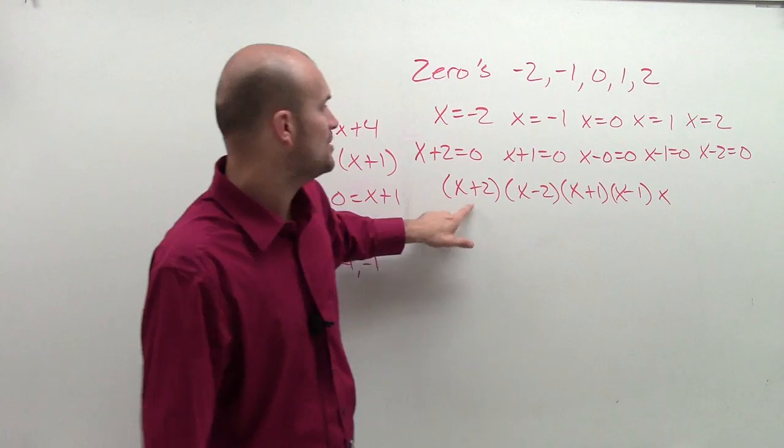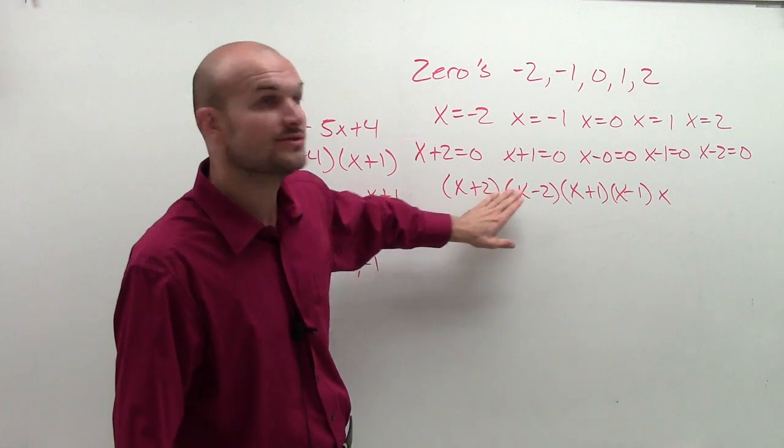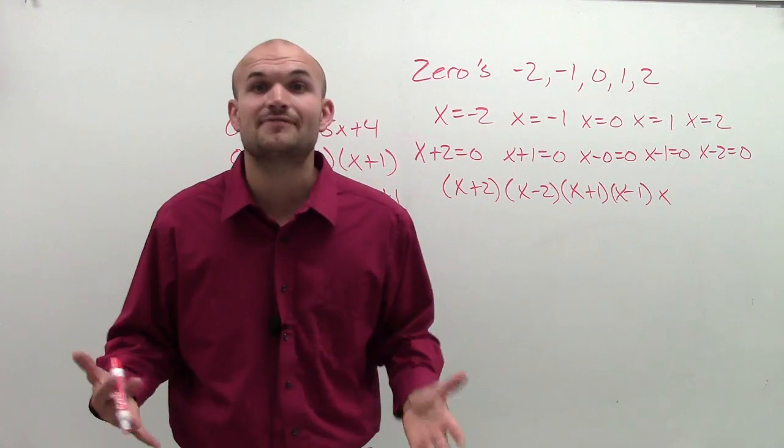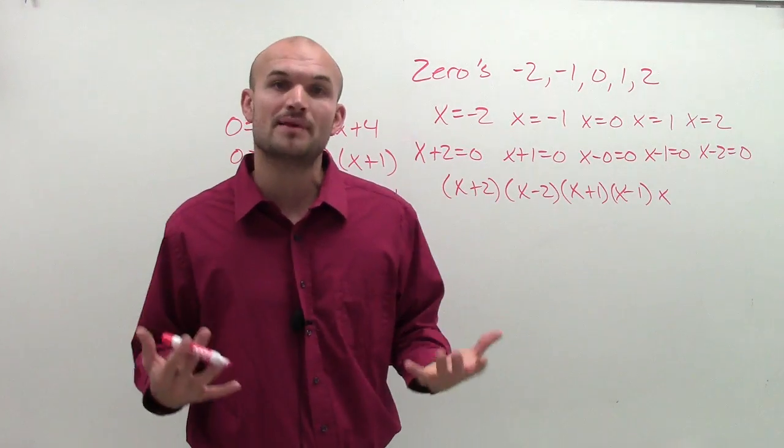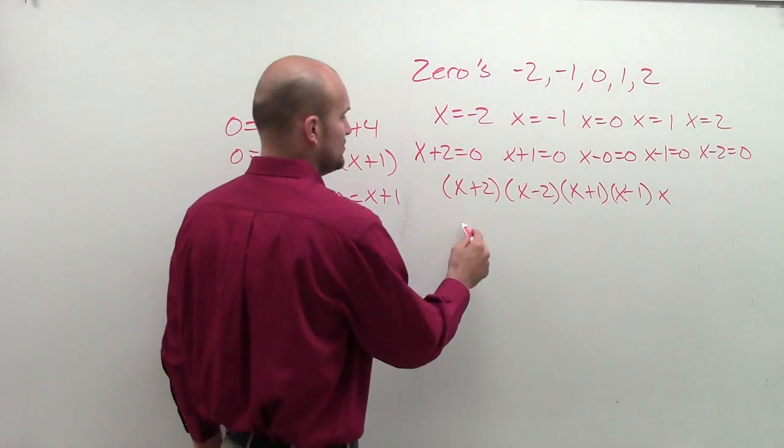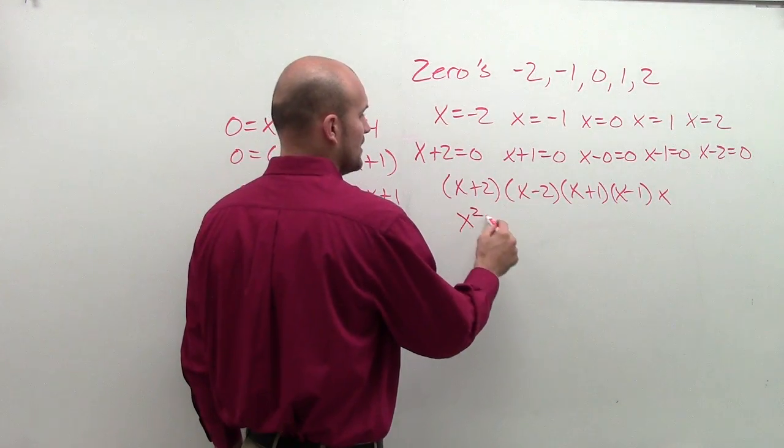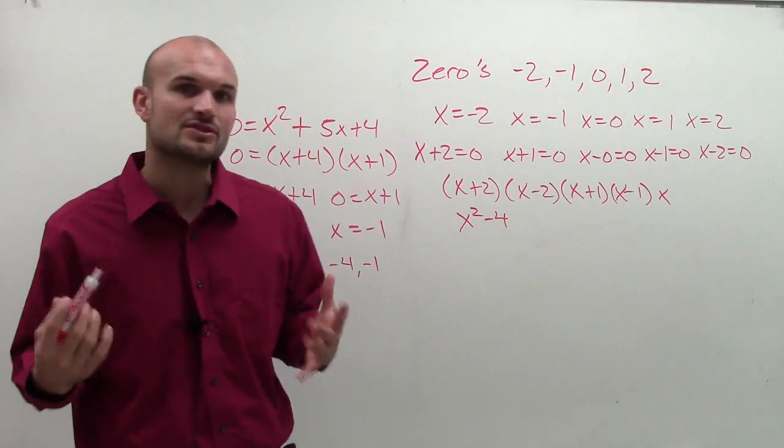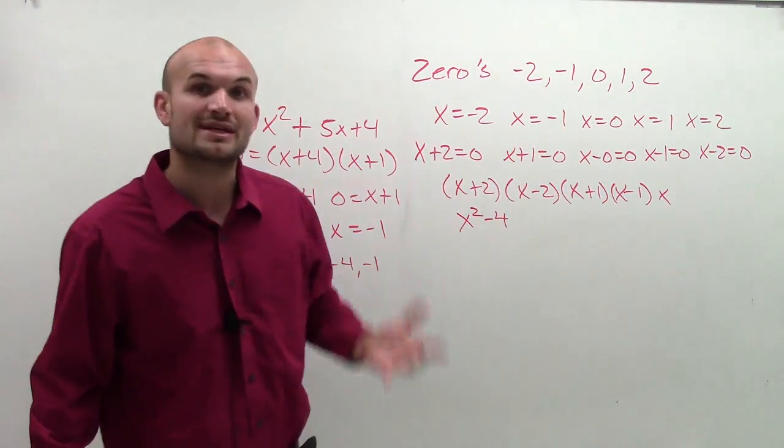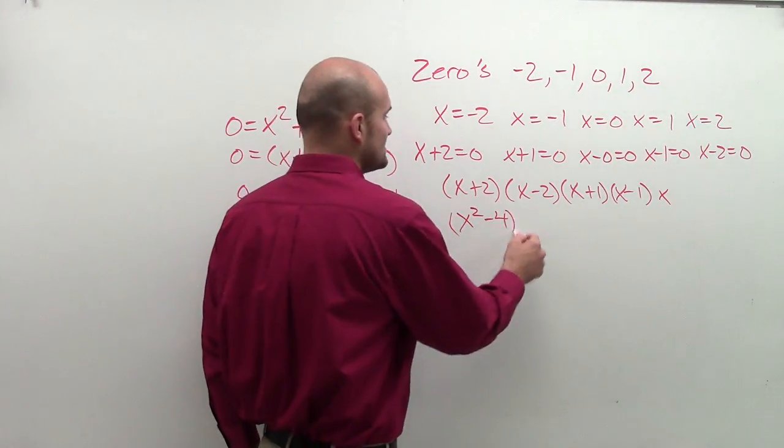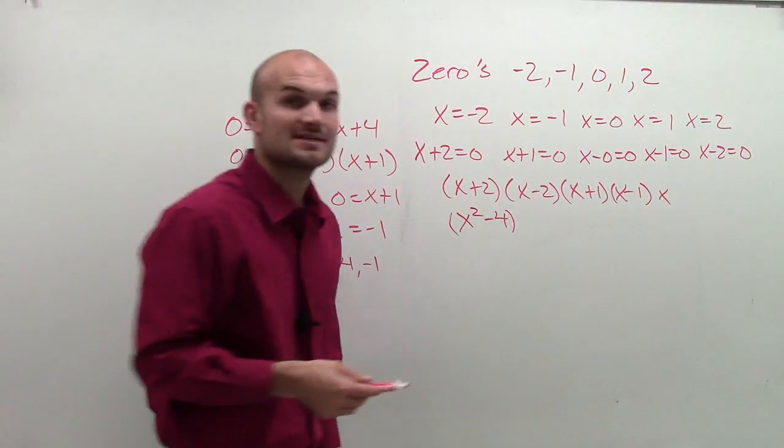And there are some shortcuts, because if I know that when I multiply x plus 2 times x minus 2, that's a difference of two squares. So when I go and multiply these binomials, all I need to do is multiply my first two terms and my last two terms, and the reason being is a difference of two squares, your middle terms are going to cancel out.